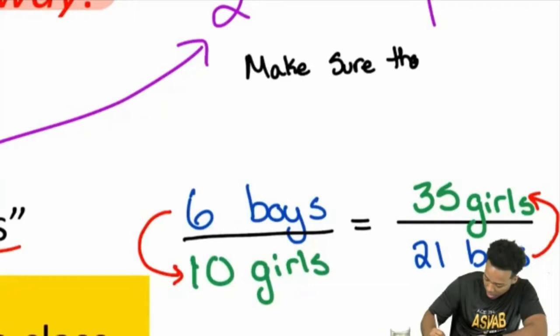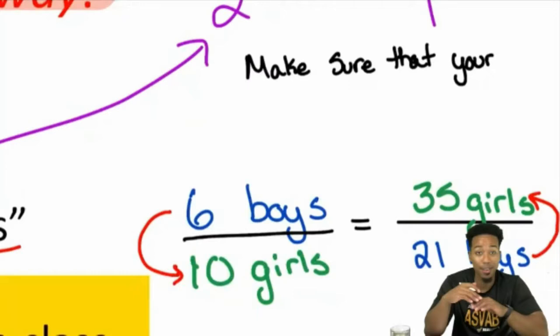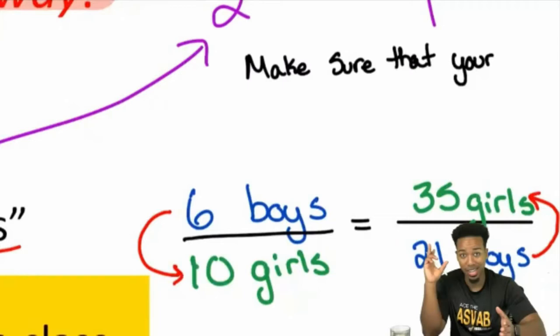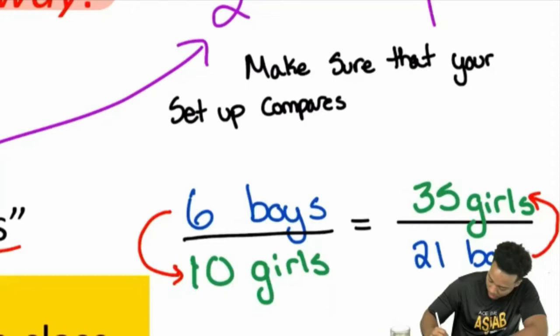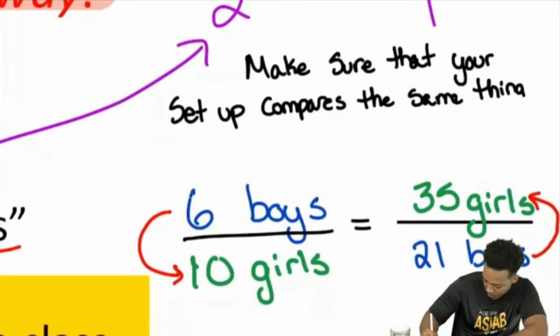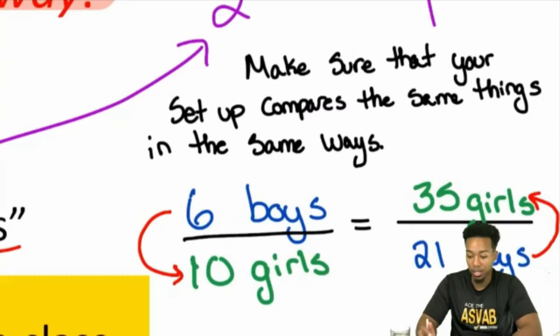This is your first lesson with proportions: you have to make sure that your setup compares the same things in the same way. I'm not repeating myself just for the sake of it — this is really the biggest important note of proportions. Once you have this idea down, you will never feel anxiety with proportions. Make sure that your setup compares the same things in the same way.